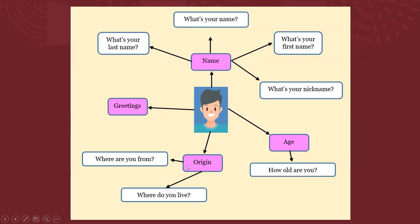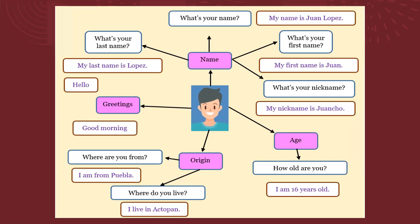Y ahora, hablar de nuestros orígenes o del lugar donde venimos — una cosa es de dónde vienes y otra cosa es dónde vives. Puse estas dos preguntas porque son diferentes y a veces las confundimos. 'Where do you live?' — 'I live in Actopan.' 'Where are you from?' — 'I am from Puebla.' También podemos decir 'I am from Actopan' si vives y eres del mismo lugar. 'Where do you live?' — 'I live in Actopan.'